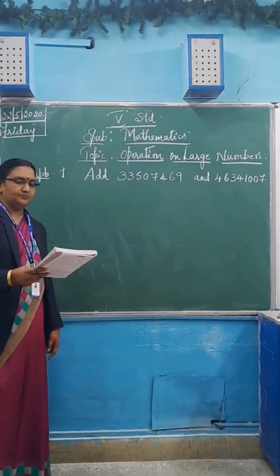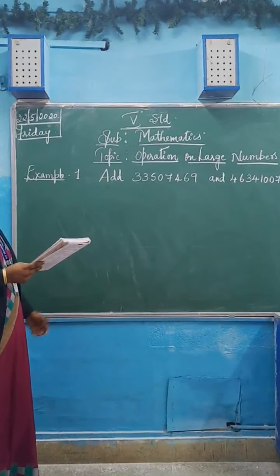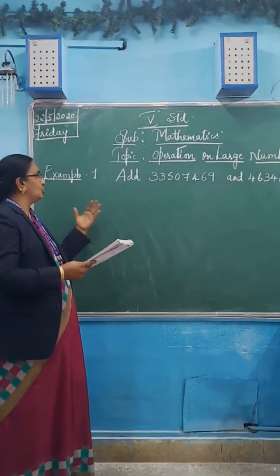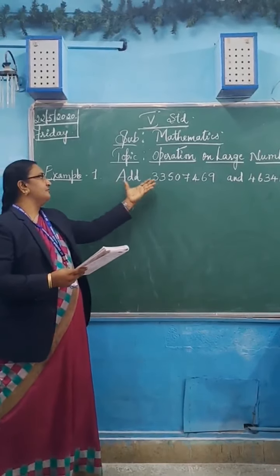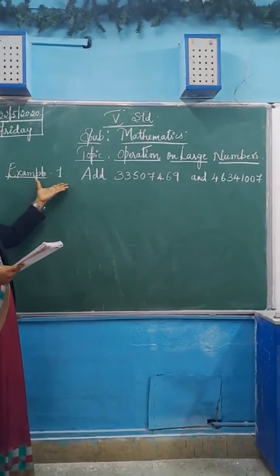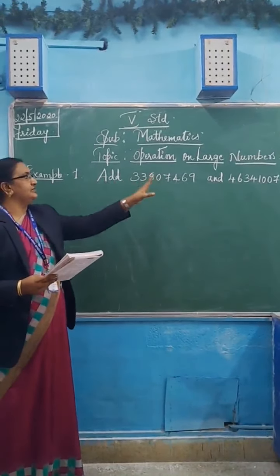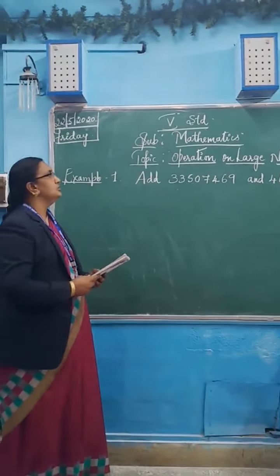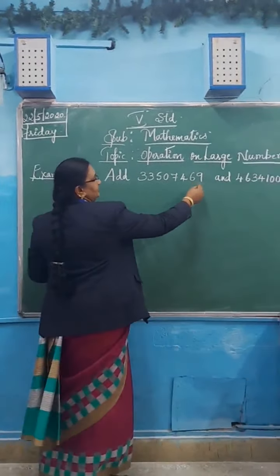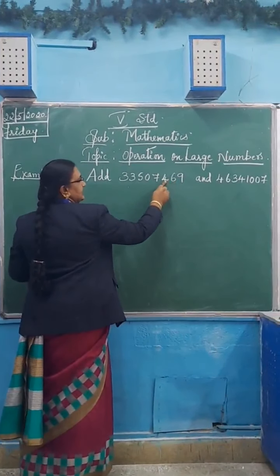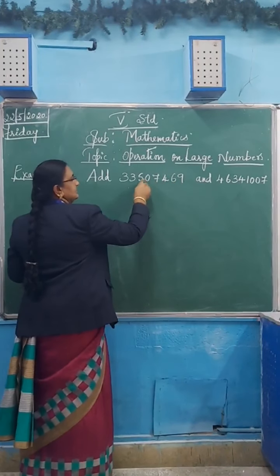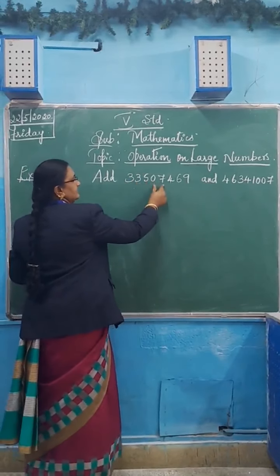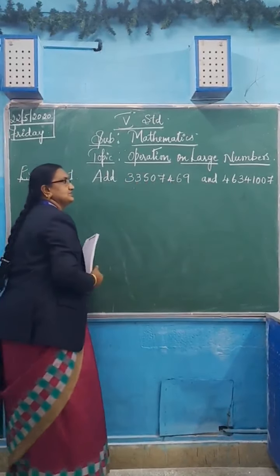Now we can add much bigger numbers or more digits. See here I have written example one — addition. How to read the number I taught you, so see according to the place values: ones, tens, hundreds, thousand, ten thousand, lakh, ten lakh, crores. Three crores, thirty-five lakhs, seven thousand, four hundred and sixty-nine.